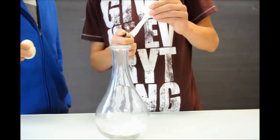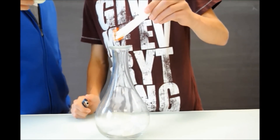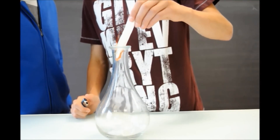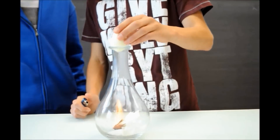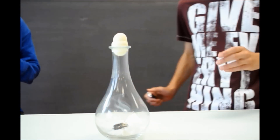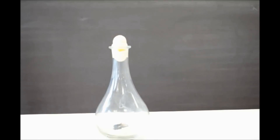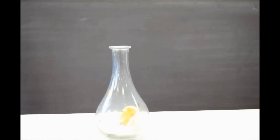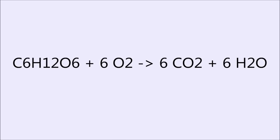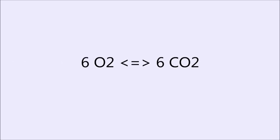Für dieses Experiment haben wir ein Stück Papier angezündet und in eine Glasflasche geworfen. Dann haben wir die Glasflasche mit einem gekochten und geschälten Ei zugedeckt. Als Folge davon wurde das Ei in die Flasche hineingezogen. Im Internet wird es meist damit begründet, dass der Sauerstoff in der Flasche verbrannt ist und deshalb ein Unterdruck entstanden ist. Dies stimmt jedoch nicht, denn bei der Verbrennung von Papier entsteht gleich viel CO2, wie Sauerstoff verbraucht wird.